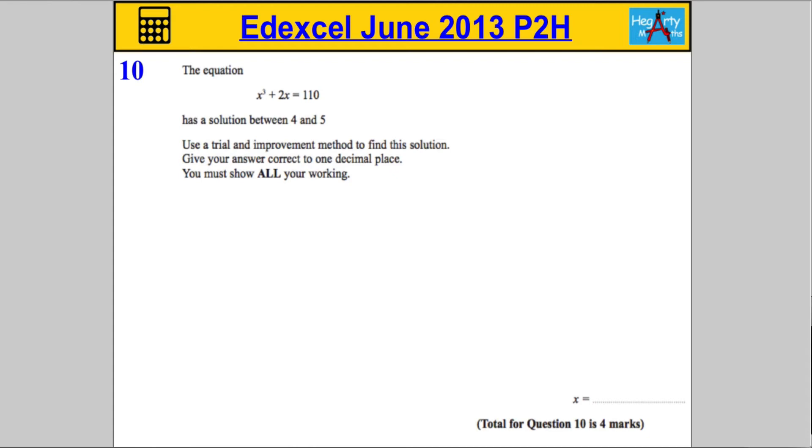Question 10: The equation x³ + 2x = 110 has a solution between 4 and 5. We're asked to use a trial and improvement method to find this solution and give our answer correct to one decimal place. It says you must show all your working.